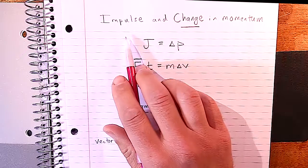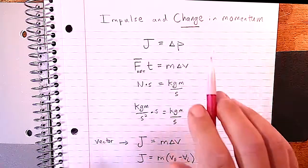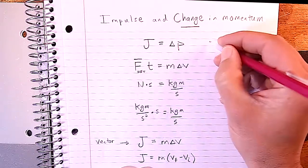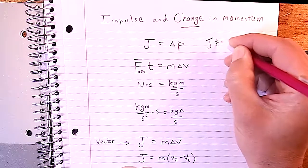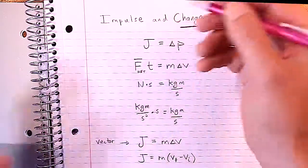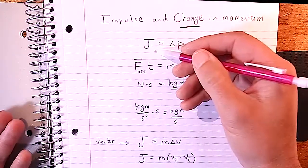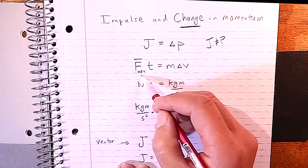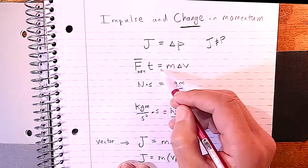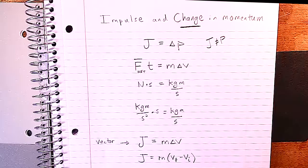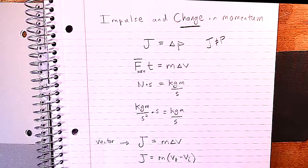When we talk about impulse and momentum, we have to be very careful: impulse is J, but it is not equal to P. Impulse is equal to change in momentum. Impulse, or J, is defined as the average net force times time, and that equals change in momentum — so that's M times delta V — giving us how much the velocity changes.